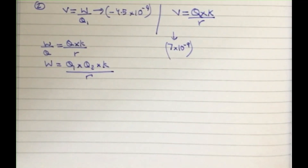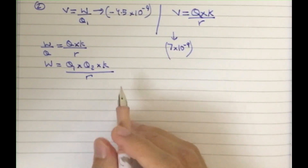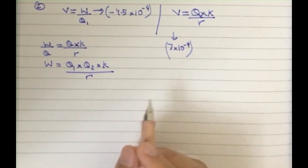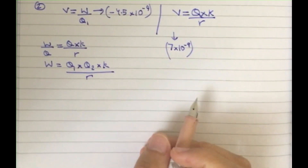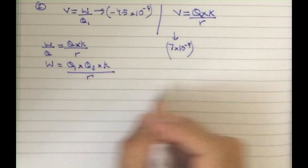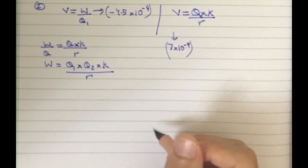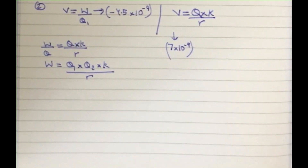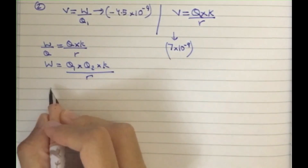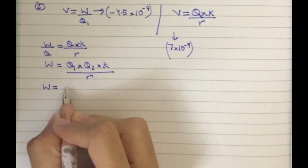Now we are going to substitute the values and find the work done for both the four centimeter and the nine centimeter cases. Then we will subtract them to get the total work done. Starting with the first case at four centimeters.